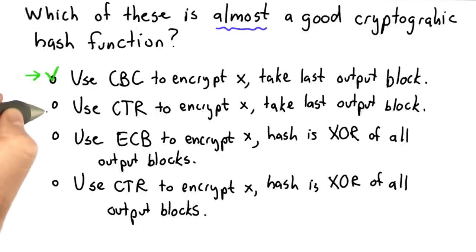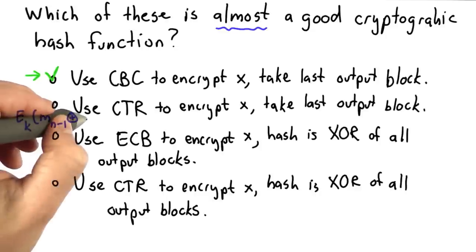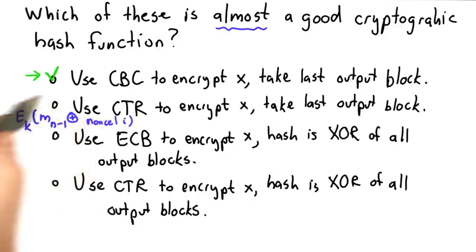So with counter mode, the value of the last output block is the encryption of the last block in the message, xored with the counter value and the nonce. And that doesn't depend on any other blocks in the message. It only depends on the last block. It depends on the length, the number of blocks before that.